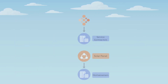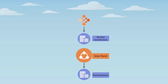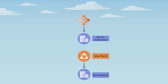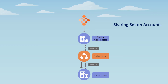In our second example, Pacifica wants to give service contractors access to accounts of homeowners who have purchased a solar panel. The solar panel is represented as an asset on the homeowner account. To give contractors access to homeowner accounts, the Pacifica admin does two things: first, she creates an account lookup field on the asset object; then, she creates a Sharing Set on accounts using an indirect account lookup on the asset object. The service contractors will get read access to homeowner accounts when the account and asset are linked via lookup.